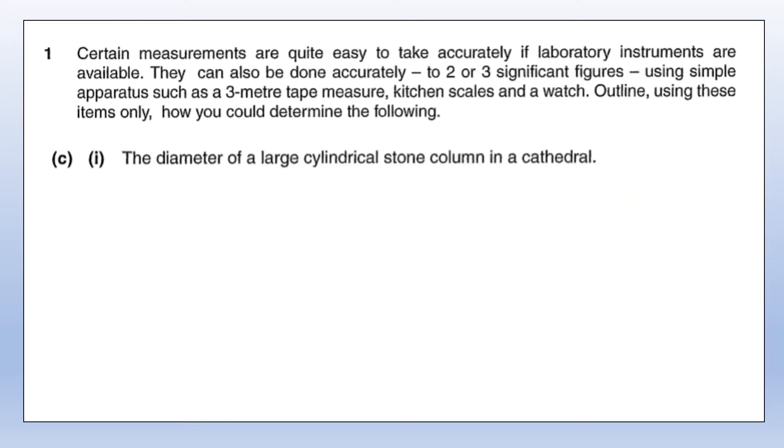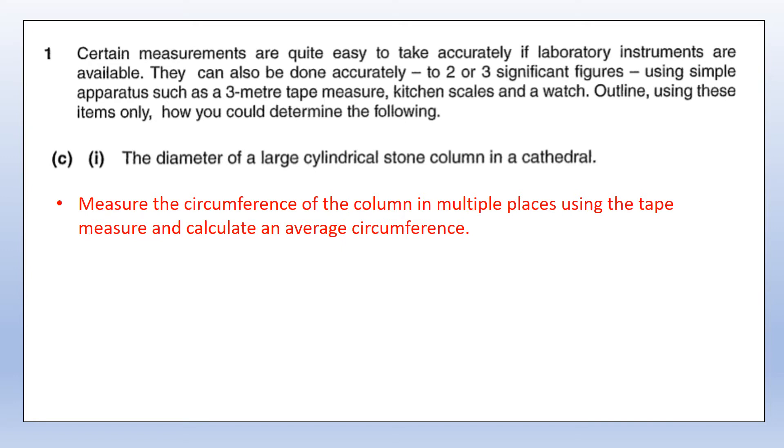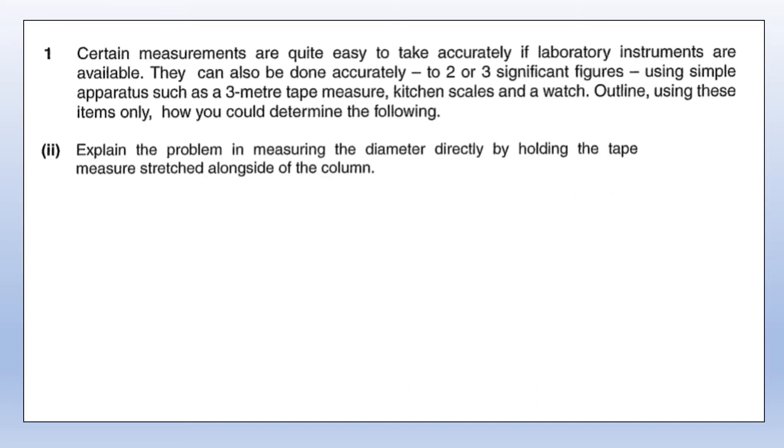We want to measure the diameter of a large cylindrical stone column in a cathedral. The thing we can actually measure fairly straightforwardly with a tape measure would be the circumference. I'd measure it in a few different places and get an average circumference, then divide the circumference by pi, and that will give us the average diameter of the column.